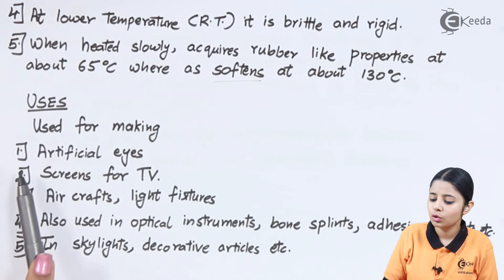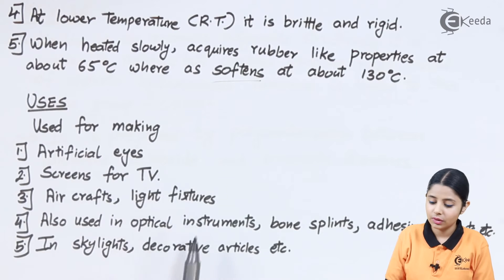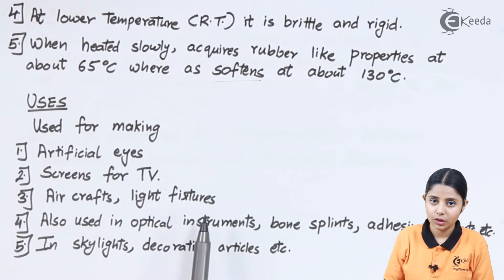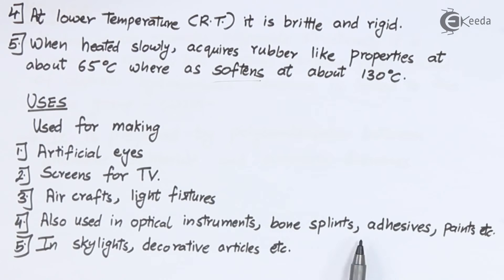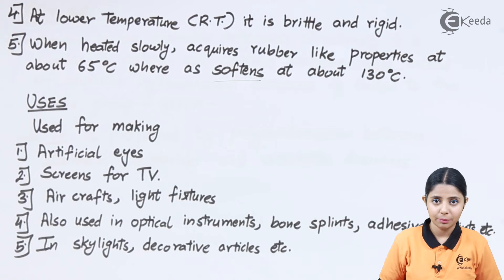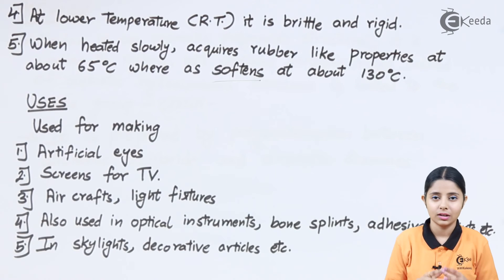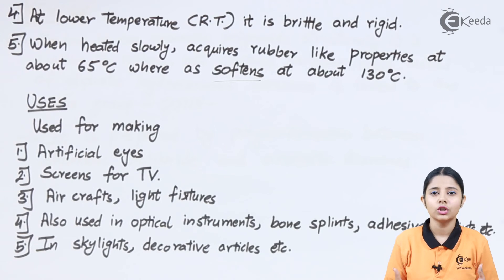The uses of PMMA include artificial eyes, TV screens, aircraft components, light fixtures, optical instruments, bone splints, adhesive paints, skylights, and decorative articles. Since PMMA is so widely used and has such great utility, it is one of the most commonly produced polymers. In today's session we studied how to make PMMA via polymerization reaction with acetyl peroxide as catalyst, its properties, and its diverse uses.